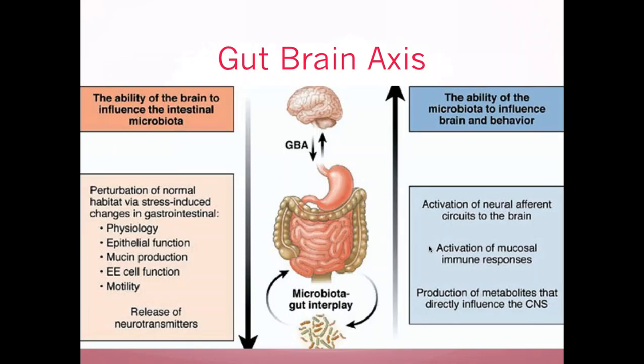The gut-brain axis: the vagal nerve goes from your central brain all the way down to line the GI tract. That nerve is the second largest bundle of nerves to the spinal cord and communicates directly between the brain and the gut — it's literally our second brain. It controls a lot of hormones and the immune system. Your brain knows what's going on in your gut at all times via the vagal nerve — sensing issues, pathogens, metabolite changes. Those weird sensations when things go awry in the stomach, the nausea and vomiting response, all happen so quickly through the brain.